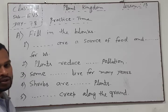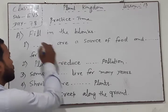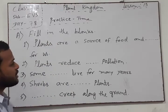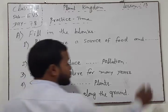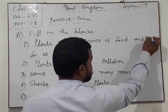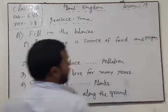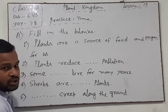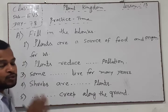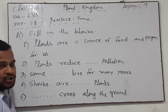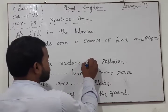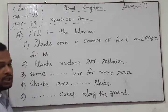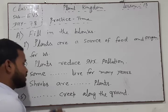Fill in the blanks: plants are a source of food and oxygen - the answer is oxygen. Plants reduce pollution in the atmosphere.